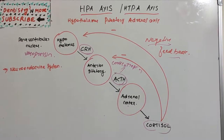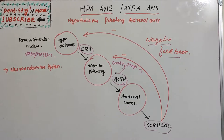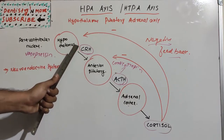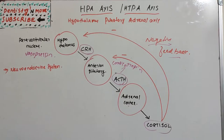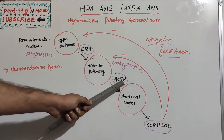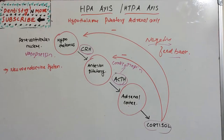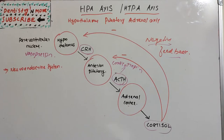So that is about the HPA axis. It is basically a stress response system starting from the hypothalamus, which releases corticotropin-releasing hormone, which stimulates the anterior pituitary to release adrenocorticotropic hormone, which ultimately causes the adrenal cortex to release cortisol to face stress. When there is overproduction, the negative feedback mechanism restores balance. This is a commonly asked short-note topic in physiology. Thank you.